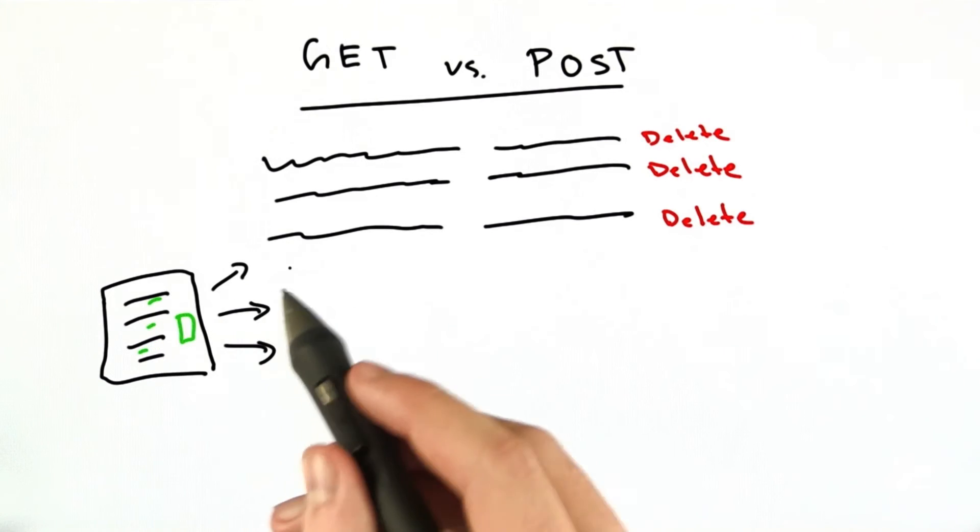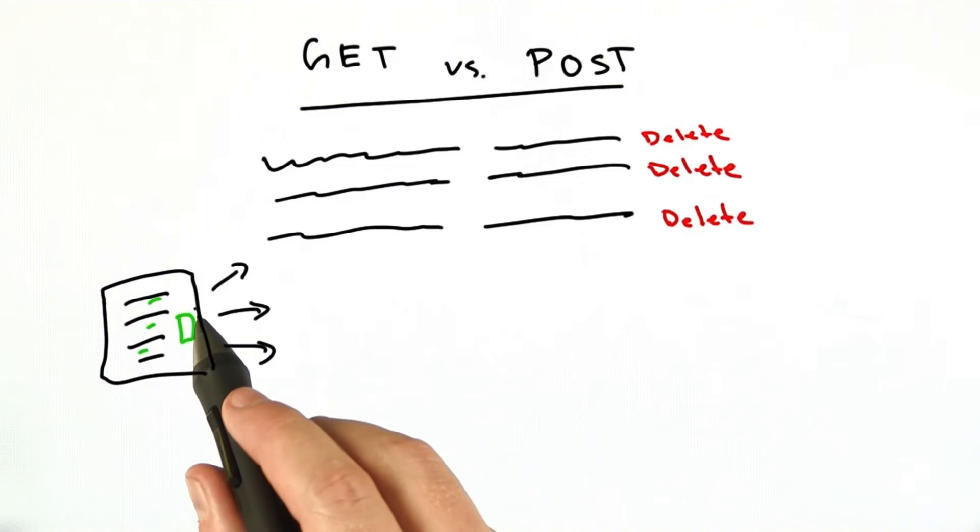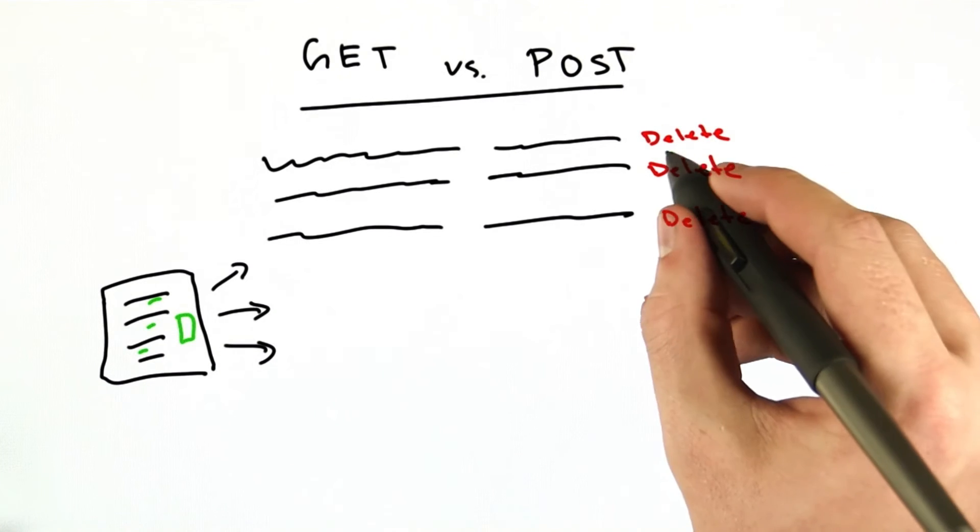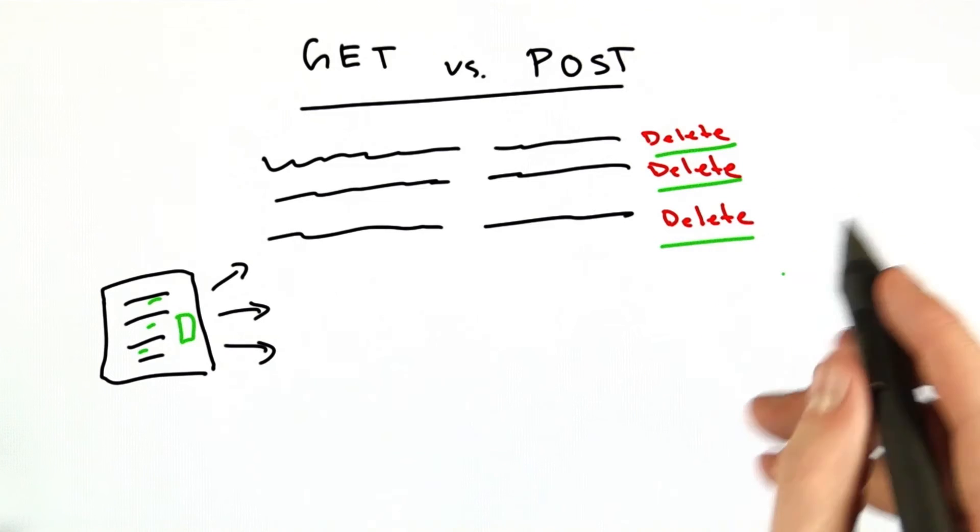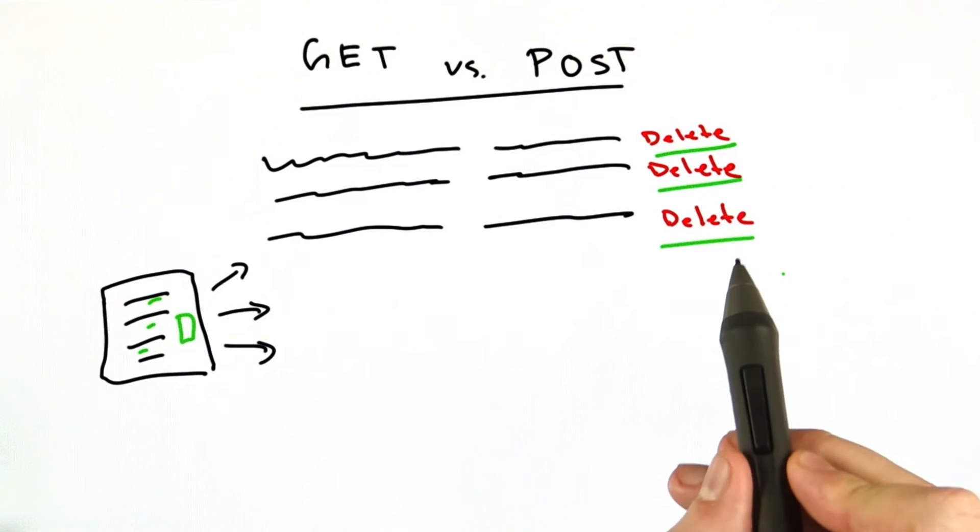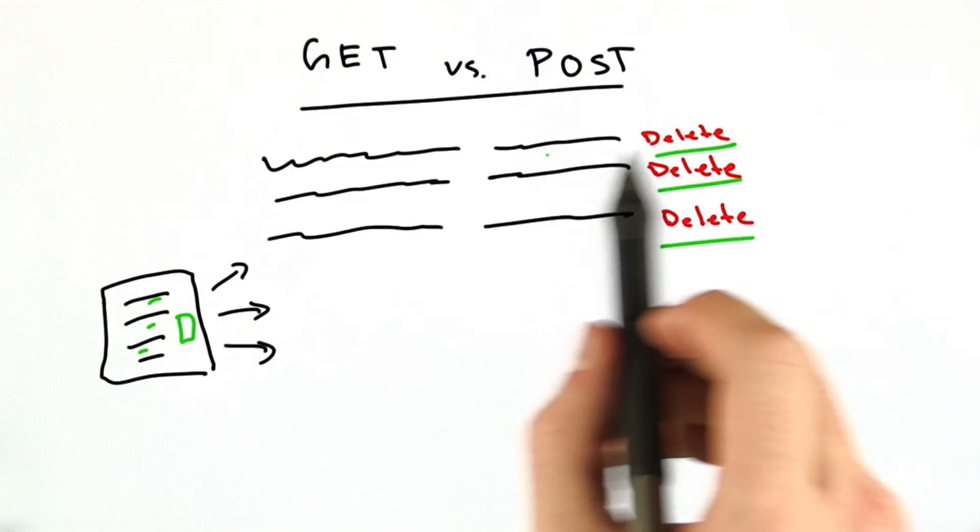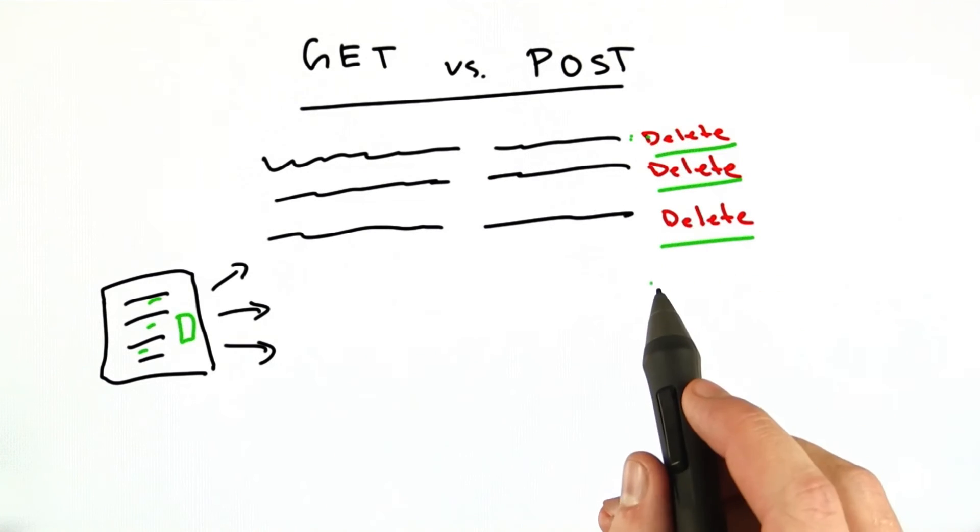The Google Web Accelerator would make those requests behind the scene, so that when you click the links, the pages were ready to go. The problem is the Google Web Accelerator was hitting these links. So users would go to their Basecamp page, look at their to-do list, and find that their items were deleting on their own.